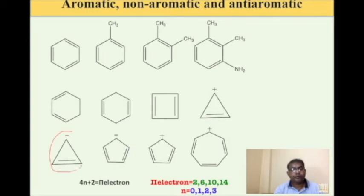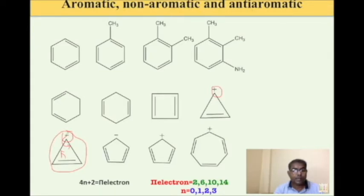Now if you consider this molecule — this carbon is sp2, this is sp2. As I have already discussed, this is sp2 but this one is sp3. However, in this special case, in the ring structure it becomes part of the ring and behaves as sp2 because there is resonance in the structure. So we will consider its lone pair as pi electrons. Counting 1, 2, 3, 4 — so 4 pi electrons means 4n=4, n=1 — this compound is anti-aromatic.